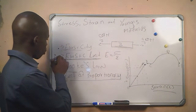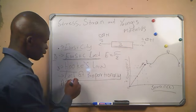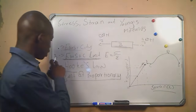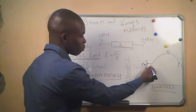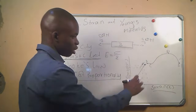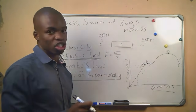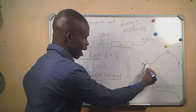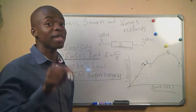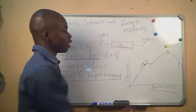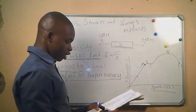Point B on the graph is the elastic limit. It's very important that you know this graph because it will be examined. From O to B, if this object is stretched, it will be able to return back to its original form. From A to B, the stress and strain are no longer directly proportional, but the object will still be able to return to its original form. Point B is our elastic limit.